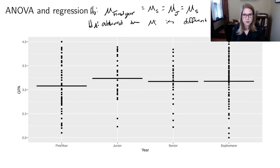And the way that we're going to do that is we're going to use some statistics from our sample. And so we've got our X bar first year, we've got our X bar junior, we've got our X bar senior, and we've got our X bar sophomore.